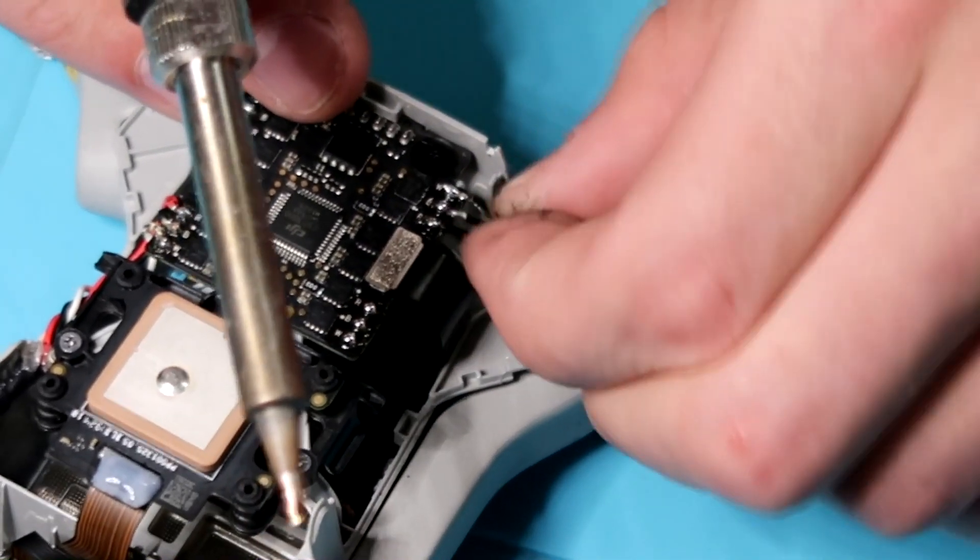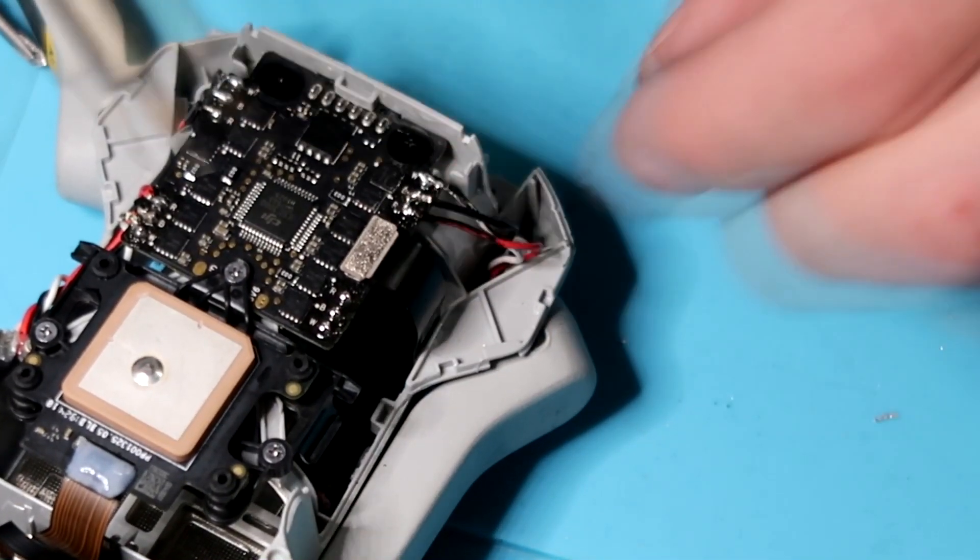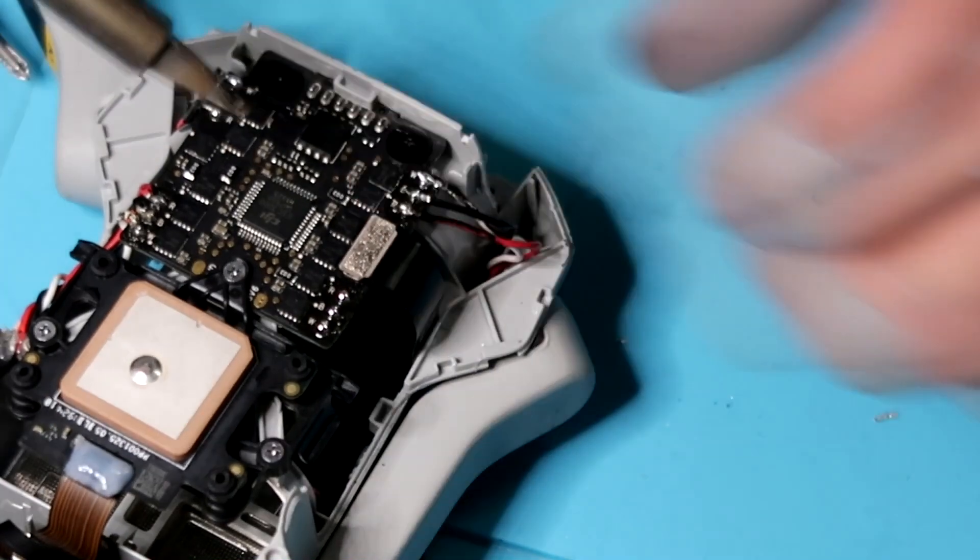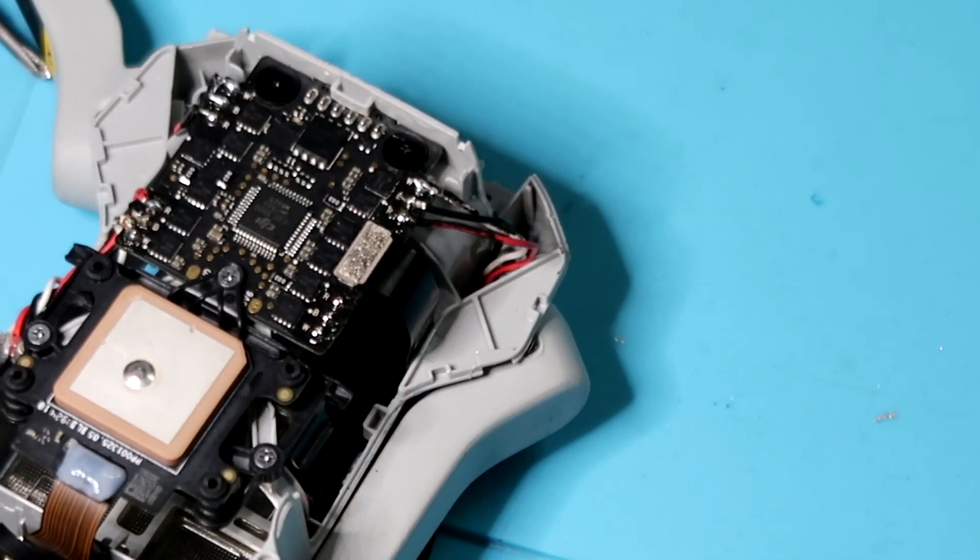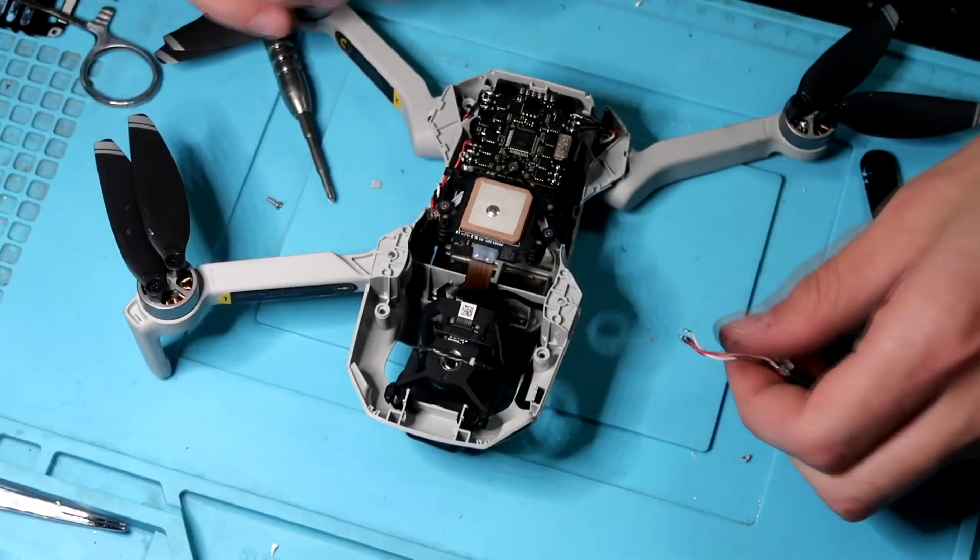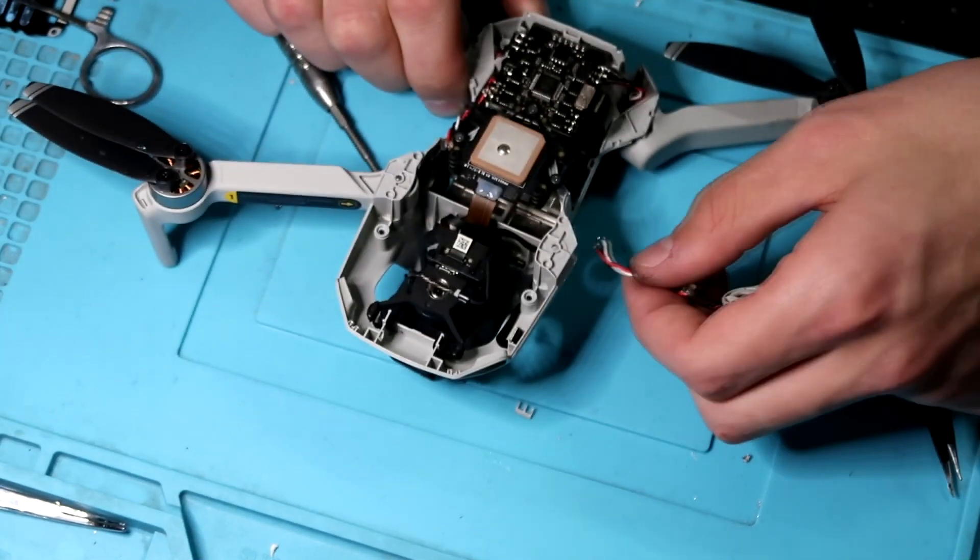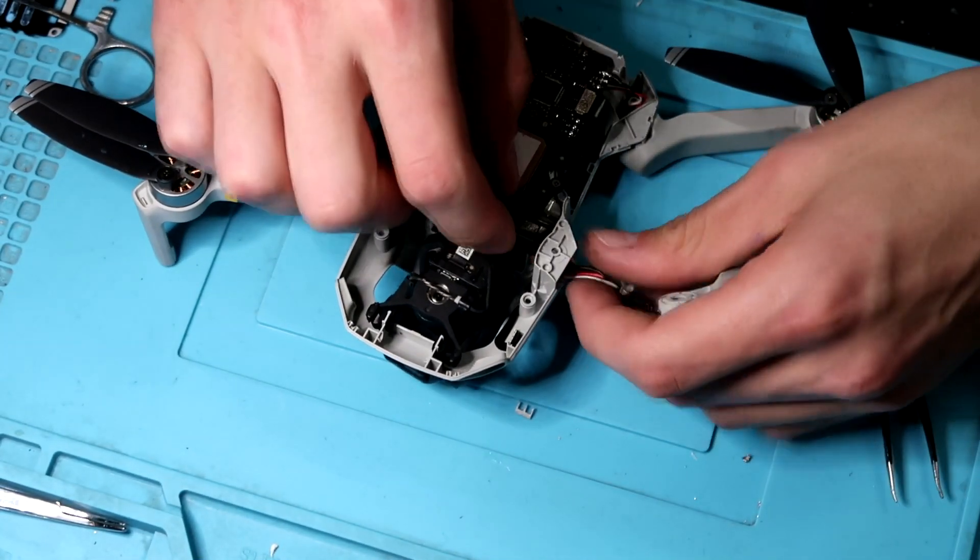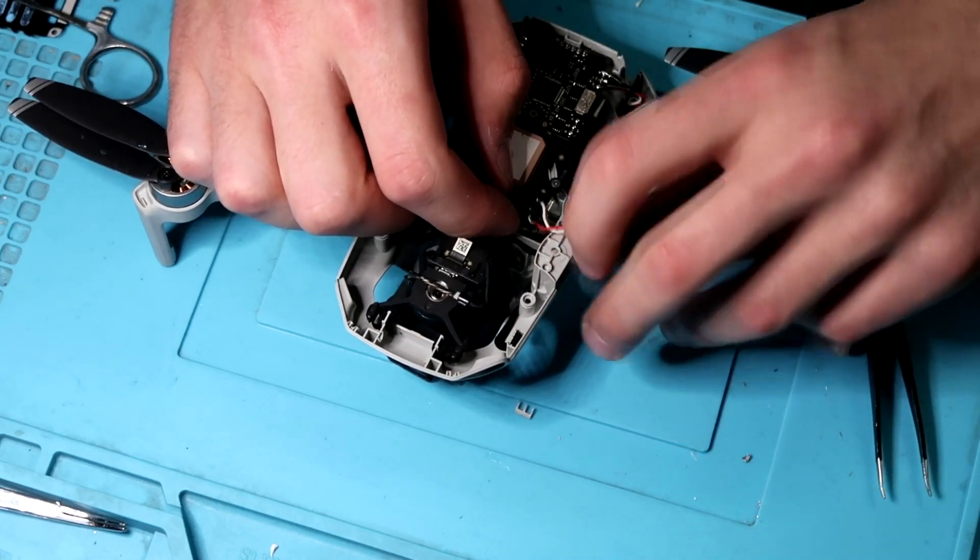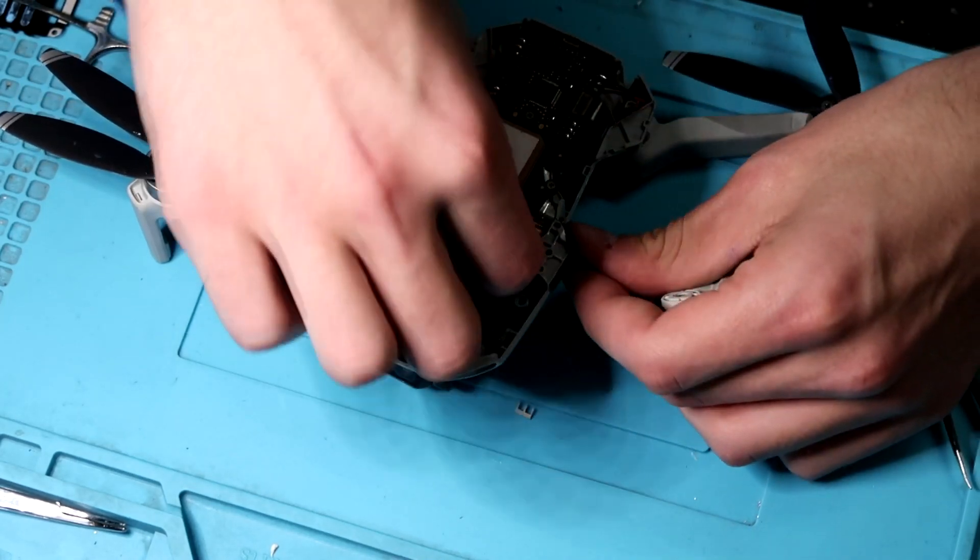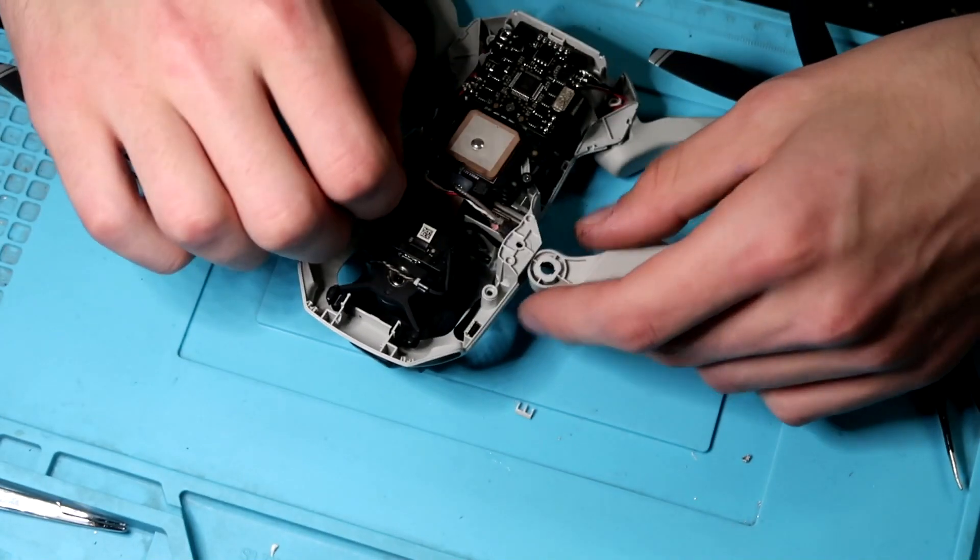As you can see here, I actually ended up bridging those two little pads. But if you know what you're doing, you can just clean it up and you'll have no problems. Here's the hole for the front motor. Go ahead and slide those wires through that hole and then I'll show you where to put this UFL connector for the antenna.